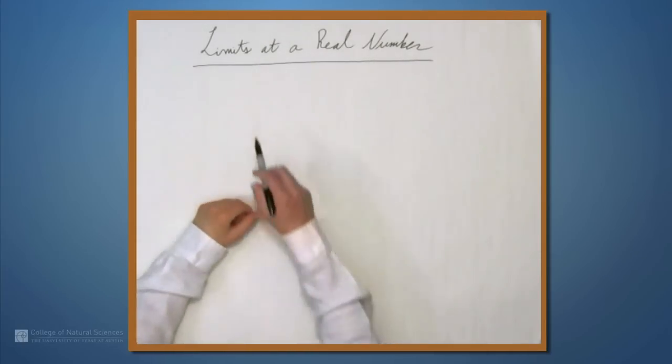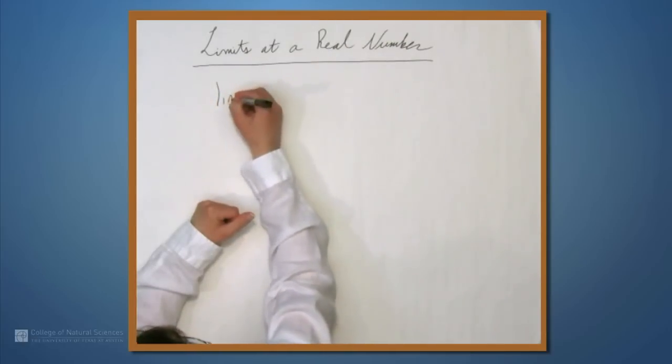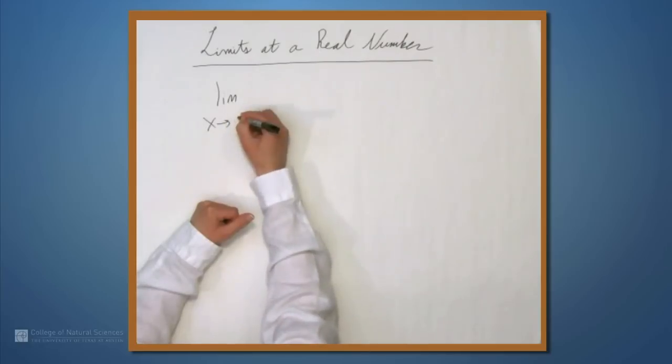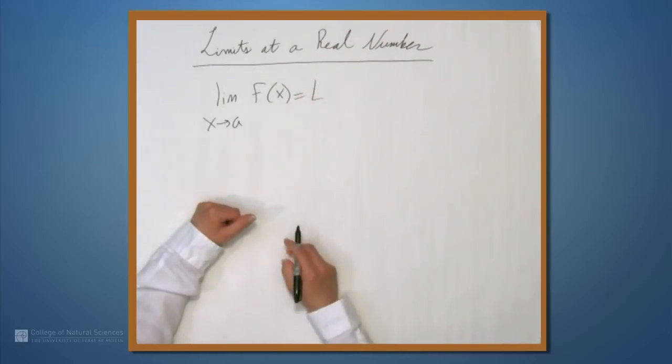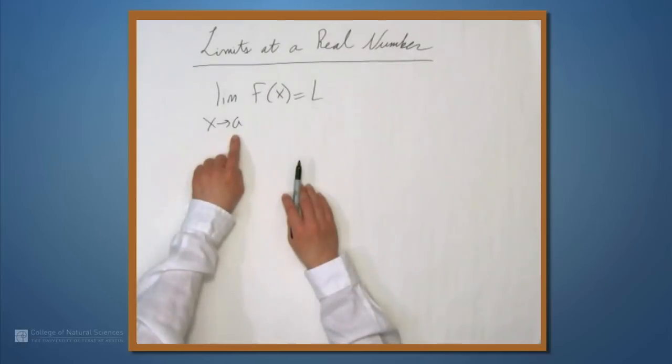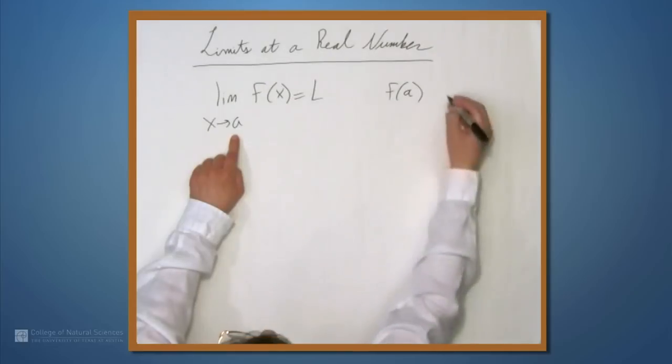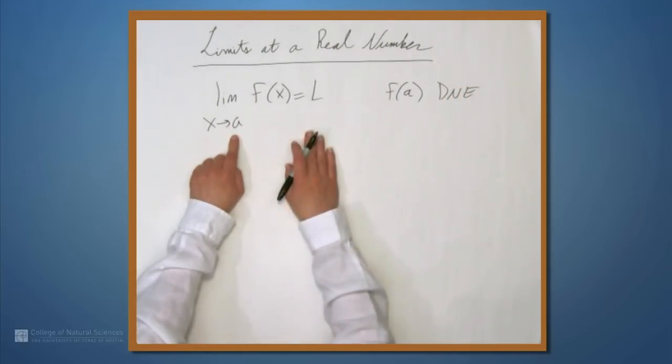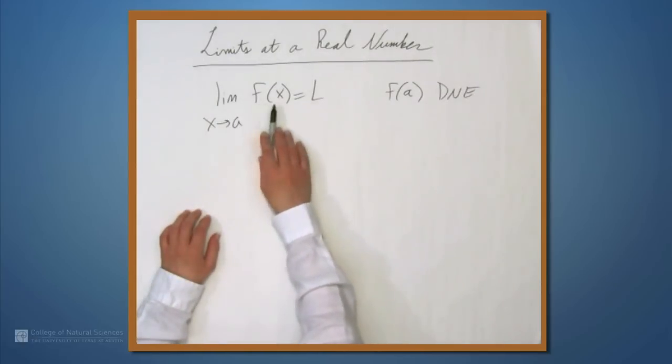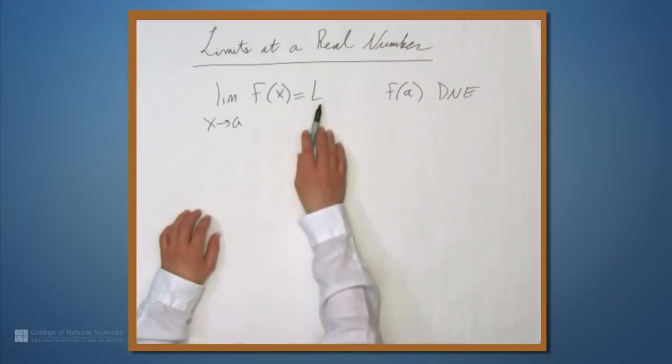We're here at the example table, and in this video we're going to be looking at limits at a real number. So when we write something like the limit as x approaches a of f equals L, we're saying something about the way f behaves when x is near a. We're not saying anything about what f is. f might not even exist, and this limit statement can still hold. So we're only talking about values that f takes on as x approaches a. What we're saying is that those values get closer and closer to L.